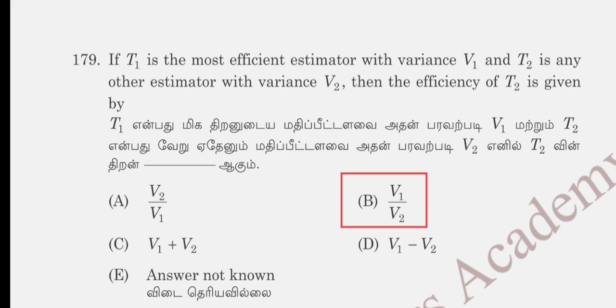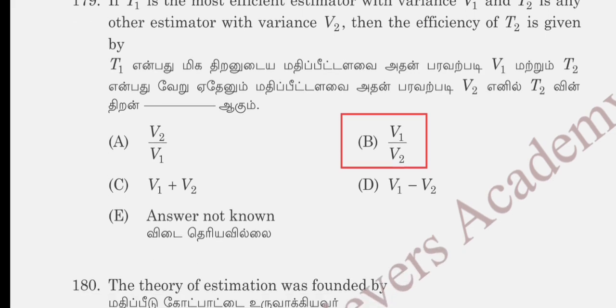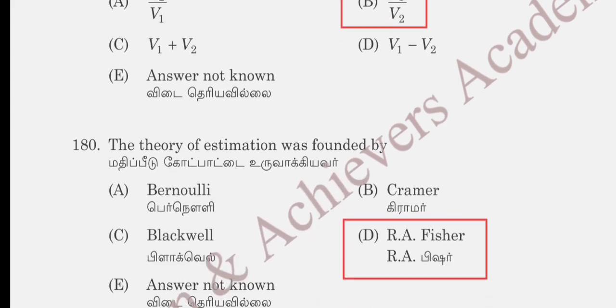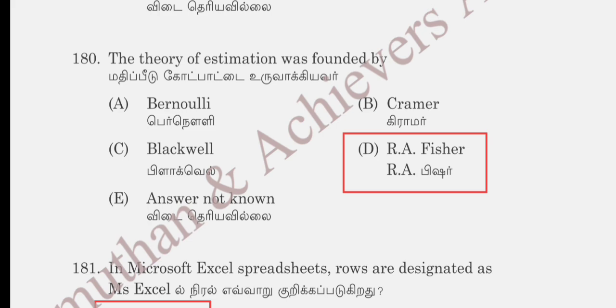Question 179: if T1 is the most efficient estimator with variance V1, and T2 is any other estimator with variance V2, then the efficiency of T2 is given by: option A V2/V1, option B V1/V2, option C V1 + V2, option D V1 − V2. Option B, V1/V2, is correct. Question 180: the theory of estimation was founded by Bernoulli, Cramér, Blackwell, or R.A. Fisher. R.A. Fisher is correct, option D.